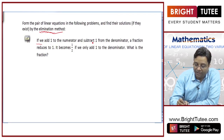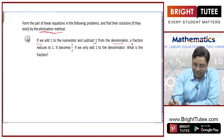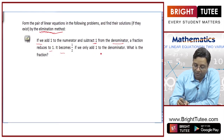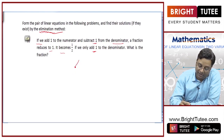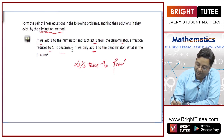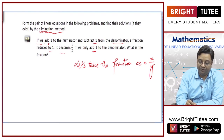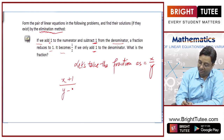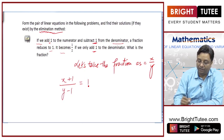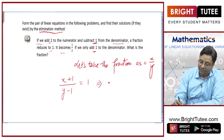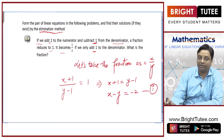If we add 1 to the numerator and subtract 1 from the denominator, a fraction reduces to 1; and it becomes 1 by 2 if we only add 1 to the denominator. What is the fraction? Let us take the fraction as x upon y. The first condition: x plus 1 over y minus 1 equals 1. Solving this, x plus 1 is y minus 1, so x minus y equals minus 2, and this is our equation number 1.